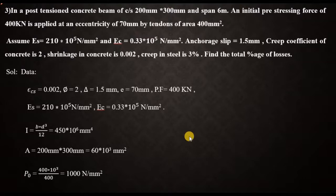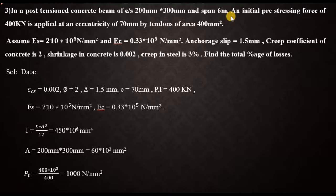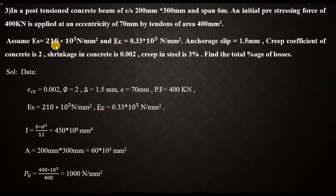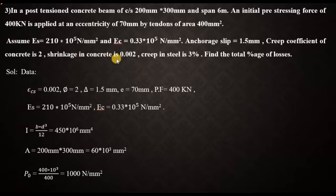Today I'm going to explain a problem on how to find the total percentage of losses in prestress in a post-tension concrete beam of cross section 200 mm by 300 mm and span 6 meters. An initial prestressing force of 400 kilo Newton is applied at an eccentricity of 70 mm by tendons of area 400 mm square. Assume ES = 210×10⁵ N/mm², EC = 0.33×10⁵ N/mm², anchorage slip = 1.5 mm, creep coefficient of concrete = 2, shrinkage in concrete = 0.0002, and creep in steel = 3%.